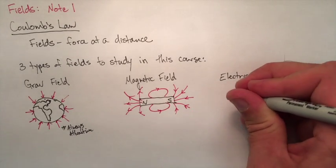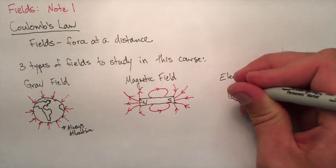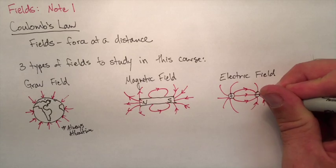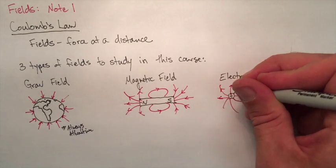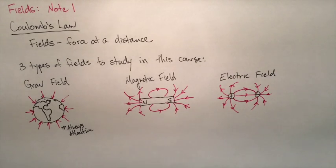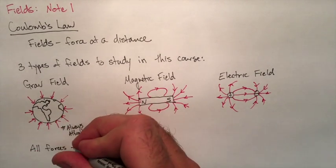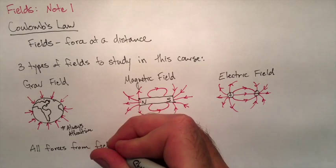The last type of fields we're going to look at in this unit are electric fields. Electric fields, we deal with positive and negatively charged objects like protons and electrons. Again here, lines will come out of a proton and go into electrons or out of something positively charged and into something negatively charged.